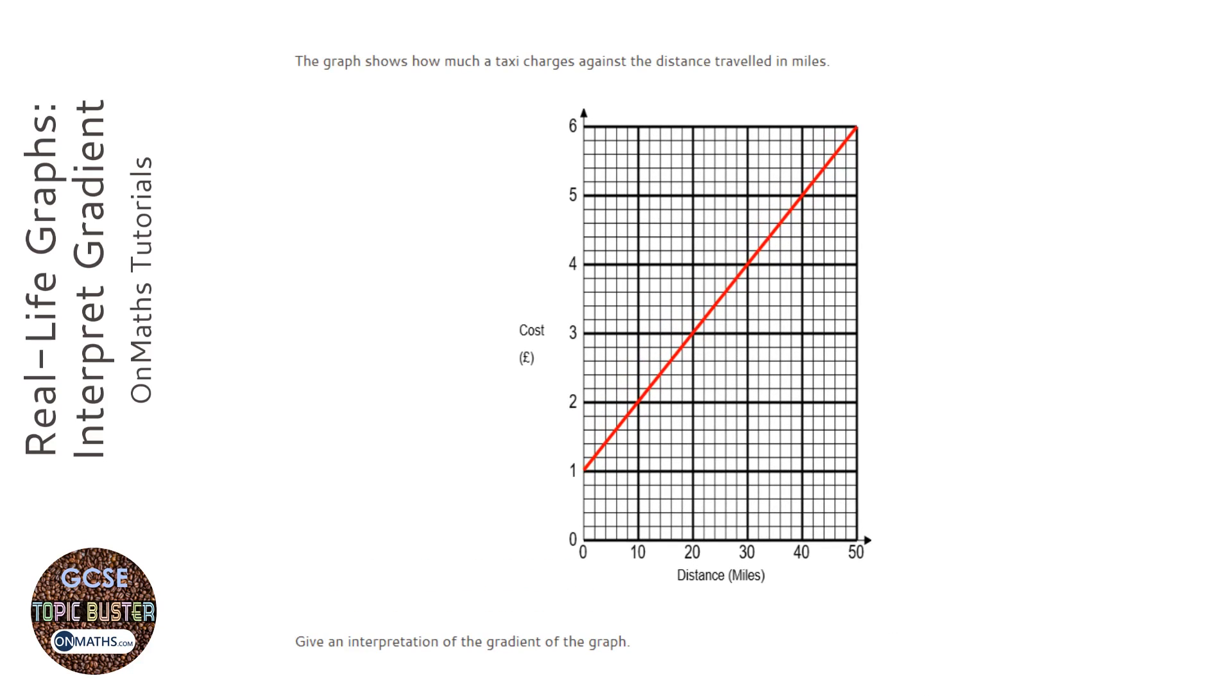To answer this question, first of all we need to know what the gradient is. So what you do is you pick two points that you know the coordinates of, which is that one and that one. I'm going to pick, works with any of them, and we work out how much up and how much across it's gone.